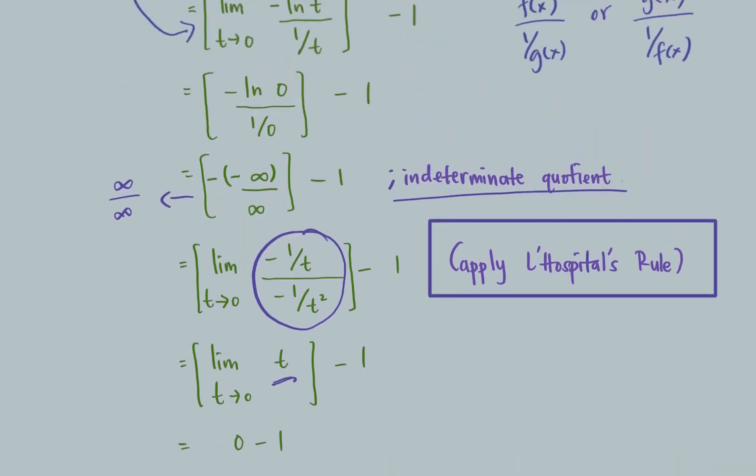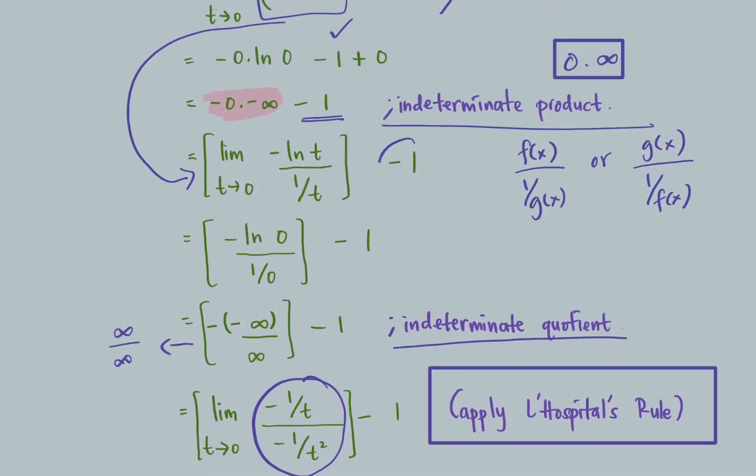Please remember that you still need to write this value at the end after the limit, after we solve the indeterminate product solution. Because this value exists from here.